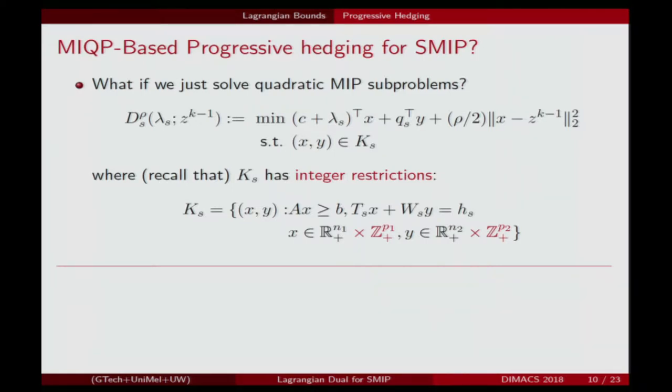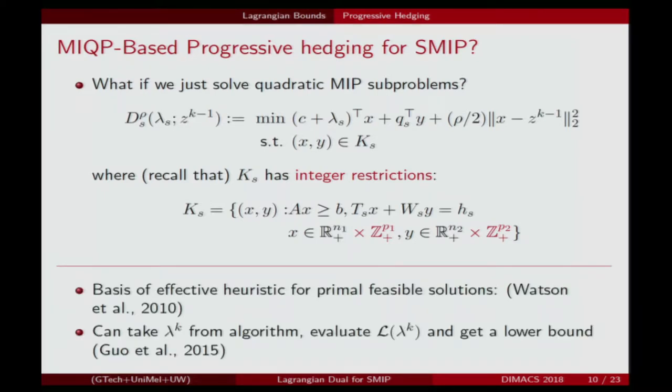The natural thing to try is to extend this for mixed integer programs: at each iteration, you just solve this mixed integer quadratic programming subproblem with integer restrictions. As John Paul mentioned, this can be a very effective basis for heuristics. Furthermore, if you run this, you can stop at any point, take the dual vector, plug it into the Lagrangian and get a dual bound.